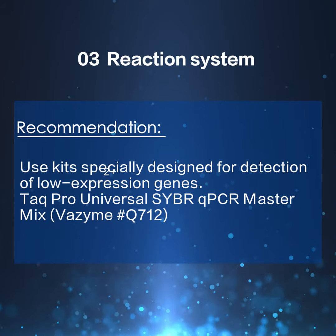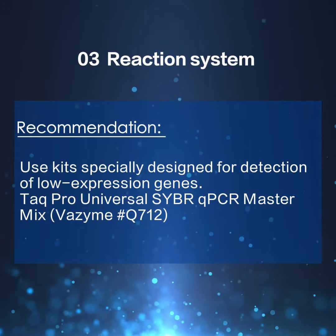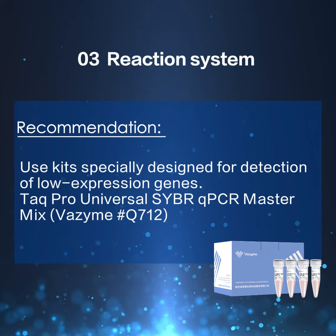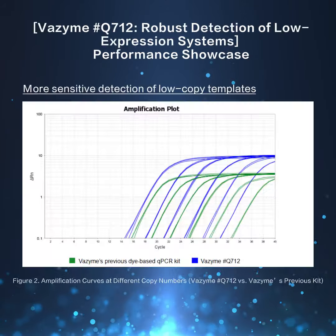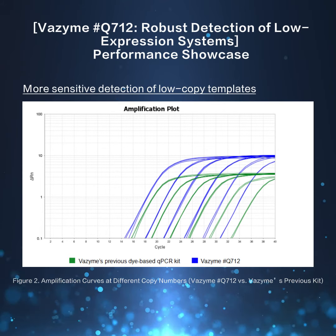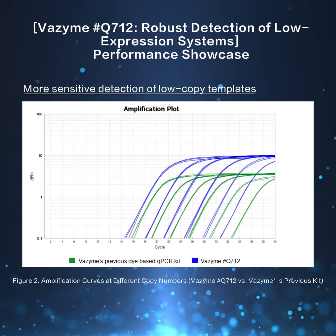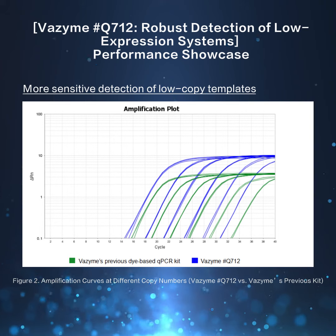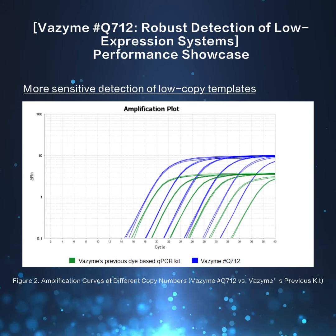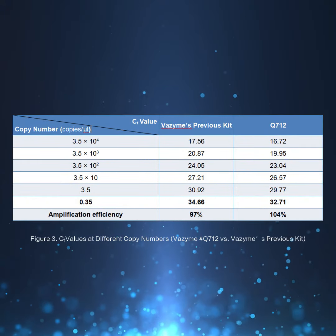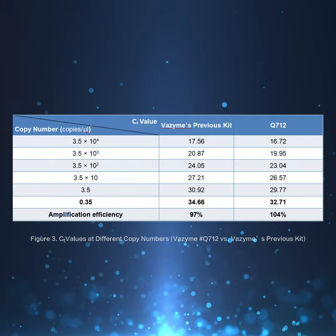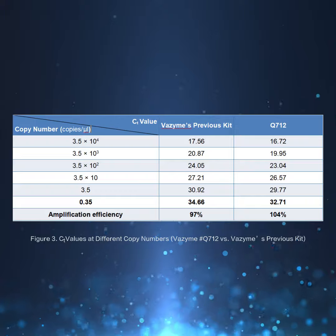Recommendation: use kits specially designed for detection of low-expression genes. VASIME's Taq Pro Universal SYBR qPCR master mix is ideal for low-expression gene testing needs. Assays on 610-fold serial dilutions of a mycoplasma plasmid template demonstrate that VASIME Q712 displays excellent amplification curves and linearity for low-copy plasmids, and is capable of detecting as low as 1.75 copies of plasmids. Compared with an earlier version of our dye-based qPCR kit, VASIME Q712 has a lower CT value at the limit of detection at the 6th dilution, indicating higher sensitivity.